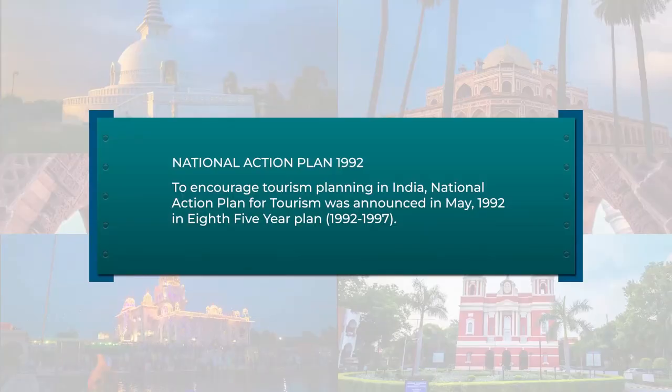Another development in tourism policy initiatives was the National Action Plan in 1992. To encourage tourism planning in India, the National Action Plan for Tourism was announced in May 1992 under the eighth five-year plan. The objective included socio-economic development of areas — tourism conferred considerable socio-economic benefits to the community, thereby uplifting the quality of life, and could foster development even in areas where other economic activities would be difficult to sustain.